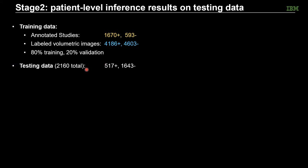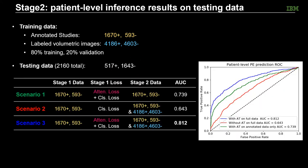Our testing data contains around 500 positive studies and more than 1,600 negative studies. We created three testing scenarios. In scenario 1, we use both the attention loss and the classification loss in stage 1, but in stage 2 we only use the limited data from stage 1 to provide patient-level labels. In scenario 2, we only use the classification loss in stage 1, not the attention loss, but in stage 2 we use the large amount of labeled data. In scenario 3, we use both the attention loss in stage 1 and the large amount of labeled data in stage 2. As can be seen, scenario 3 gave us the best results, showing that both attention supervision and large amounts of labeled data are important. This also demonstrates the scalability of our pipeline: if we have more labeled data from another hospital, we can only fine-tune stage 2 of the network using the new data.